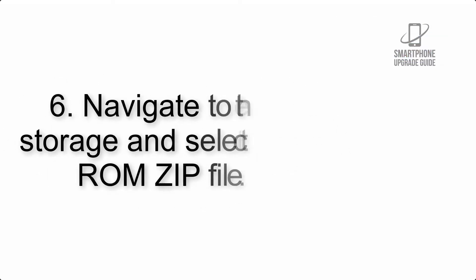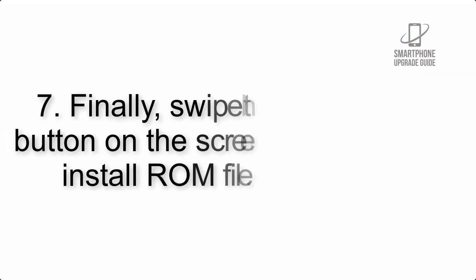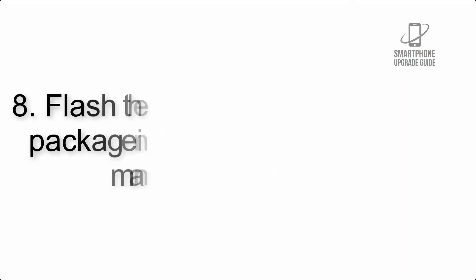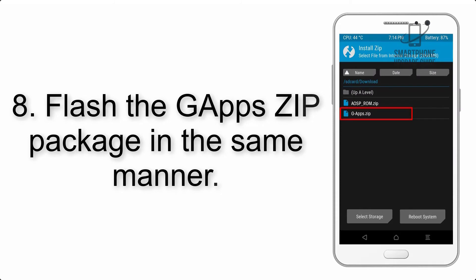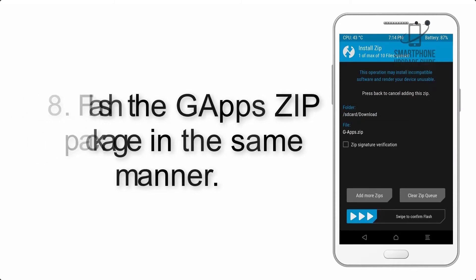Step 5: Go back to the recovery main screen and tap on the Install button. Step 6: Navigate to the storage and select the ROM zip file. Step 7: Swipe the button on the screen to install the ROM file.